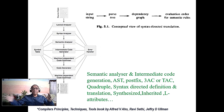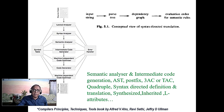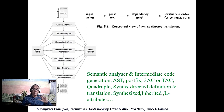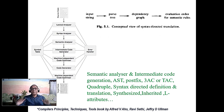Then intermediate code generation comes. It is always better that the same source language may be run on different machines, so there is an intermediate code generator. The target machine then performs further code generation, and you can optimize much more efficiently on that platform.